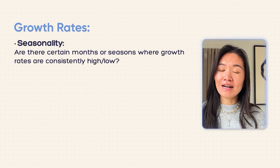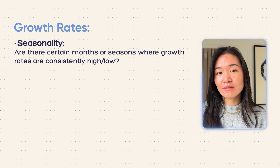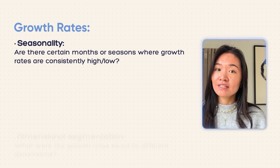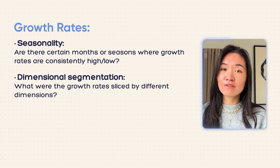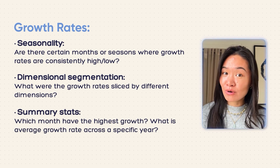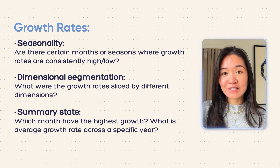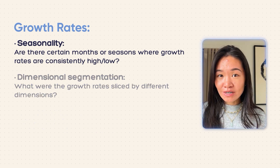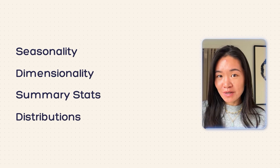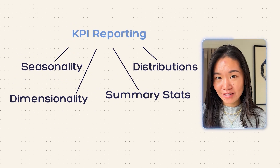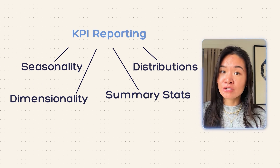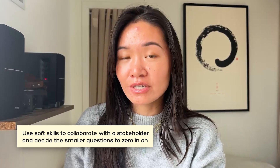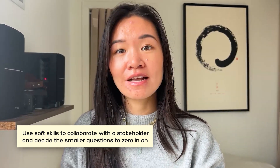For growth rates, seasonality would ask questions like what are our monthly and yearly growth rates, and are there certain months or seasons where growth rates tend to be specifically high or low? Dimensional segmentation would look at growth rates sliced by different countries or products. Summary stats would examine which months have the highest or lowest growth, and what is the average growth rate across a specific year. As a thought exercise, you can also apply these four smaller buckets to the two other big categories: performance measurement and KPI reporting. You probably wouldn't be working on all of these smaller questions at once — you'd collaborate with a stakeholder to understand which specific smaller questions to focus on.